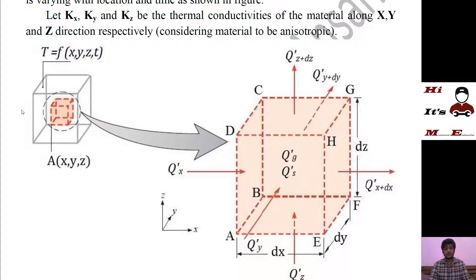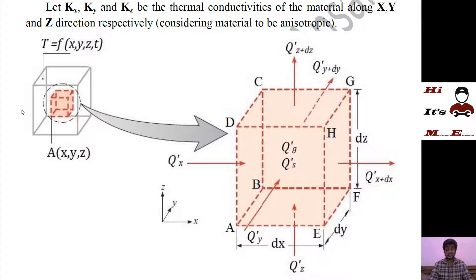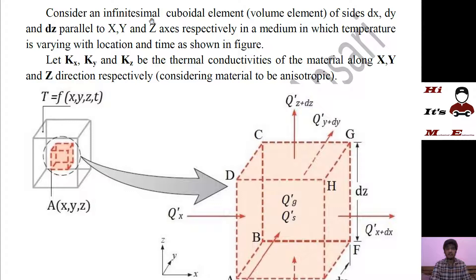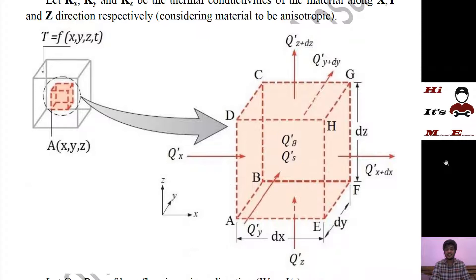This diagram is very important to understand the derivation. We have considered an infinitesimal cuboidal element of sides dx, dy, and dz. These dimensions are parallel to the x, y, and z axes respectively. As you can see, dx is parallel to x, dy is parallel to y, and dz is parallel to the z axis. Now there are eight corner points of this element: a, b, c, d, e, f, g, h. Let us assume the coordinates of point a are (x, y, z).